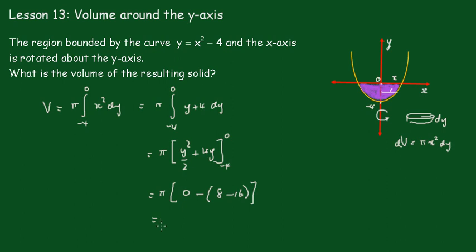because that becomes minus 8. This is negative, so it becomes positive 8. So the answer is 8 pi units cubed.